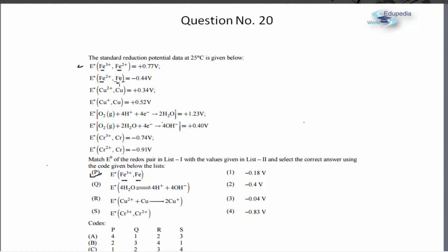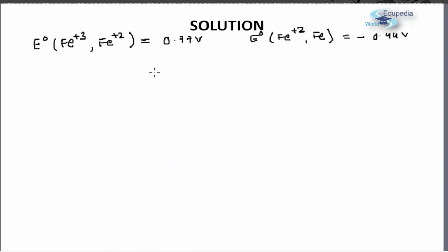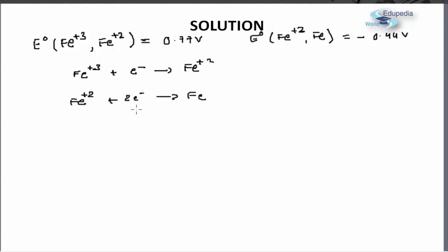Let me take you to the solution. I have copied the data from the previous page. We have been given the standard reduction potential for Fe³⁺ + e⁻ → Fe²⁺, and the SRP for Fe²⁺ + 2e⁻ → Fe. We have been asked to calculate the SRP for the conversion of Fe³⁺ into Fe. If I add the two reactions I will get Fe³⁺ + 3e⁻ → Fe.